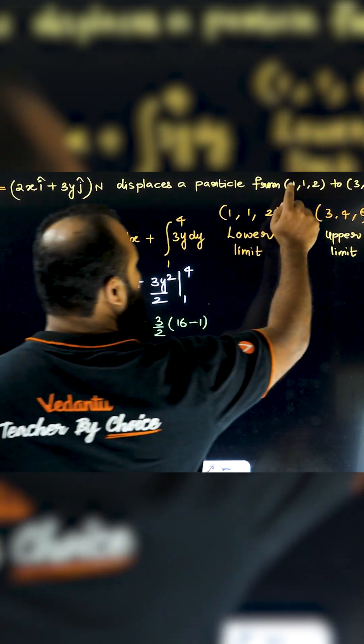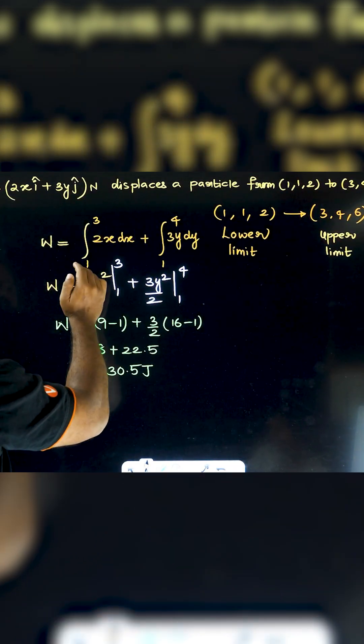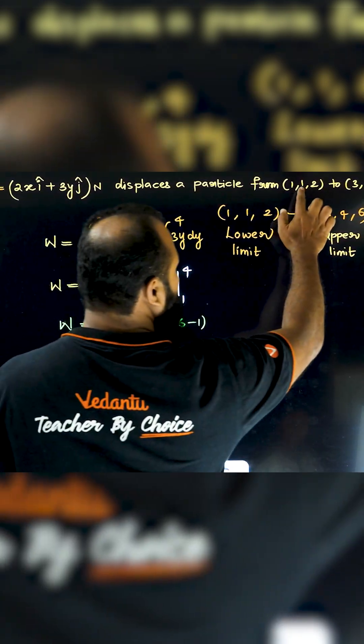For the x coordinate changing from 1 to 3, one will be your lower limit and three will be the upper limit. The y coordinate changes from 1 to 4. Simple integration.